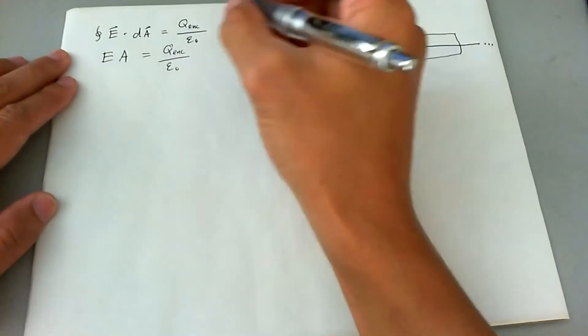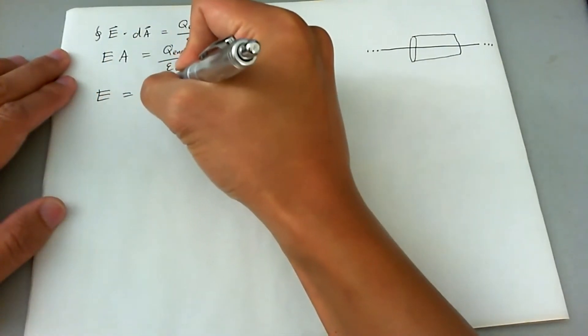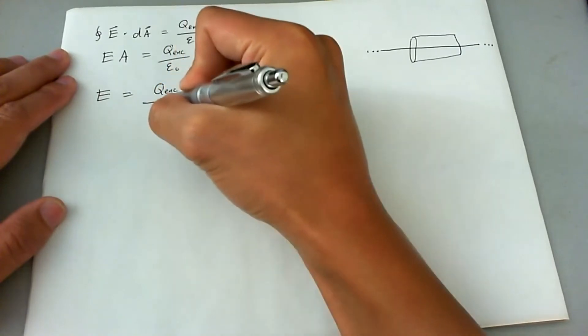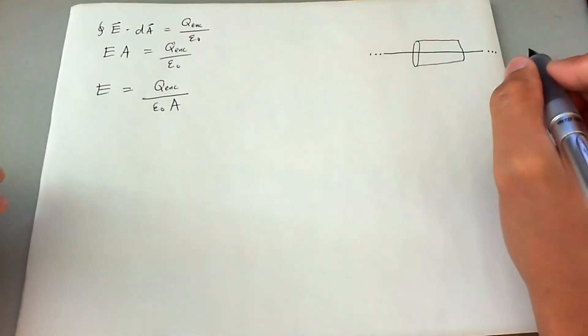Let's go ahead and isolate E and put A down on the denominator of the right side of the equation.